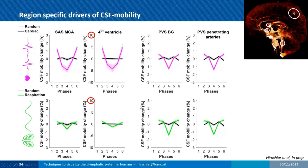For respiration, the acquisition takes about 40 minutes, so we capture average normal breathing rather than a specific breathing task. From prior literature using phase contrast, you'd expect higher pulsations with deep breathing, but here we're looking at normal respiration averaged over 40 minutes.